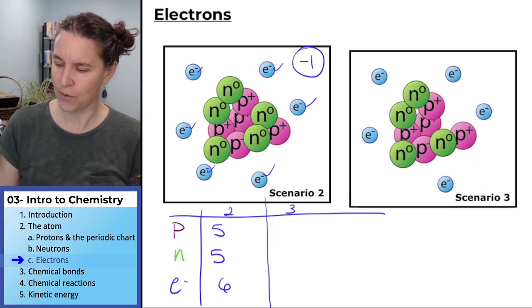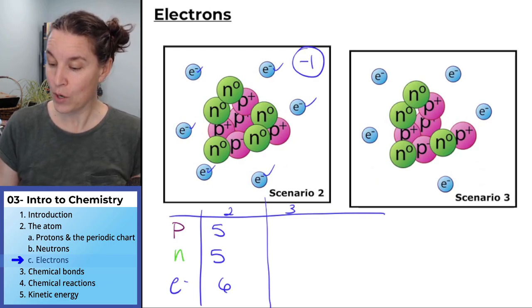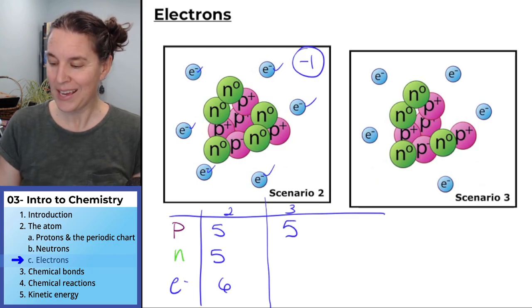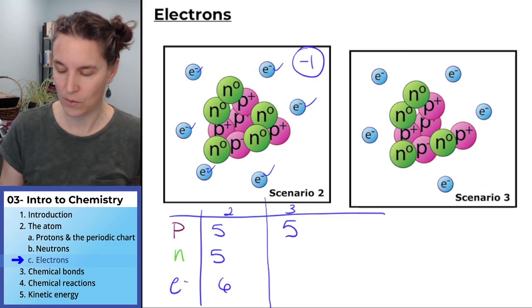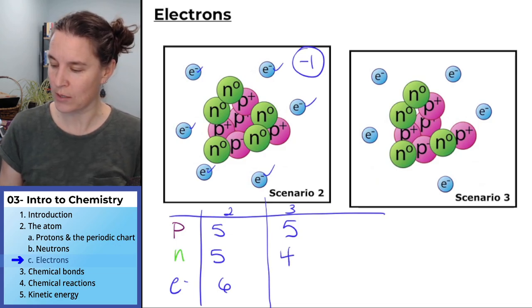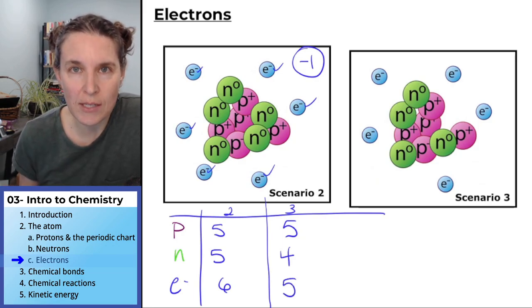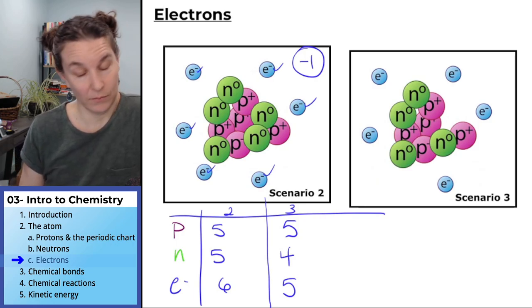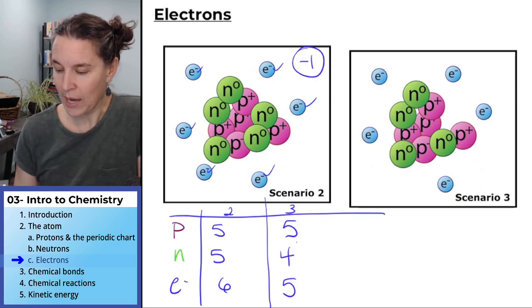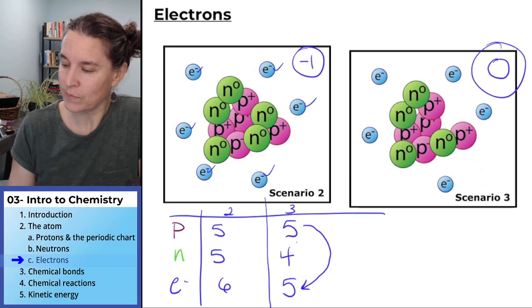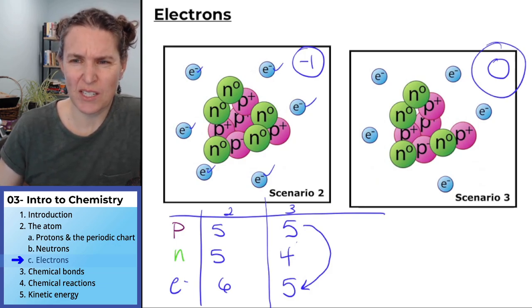Let's try scenario three just for the fun of it. Protons. We still have the same number of protons. So we have five protons. Looks like we lost a neutron. So now we're at four neutrons. And one, two, three, four, five. We kept five electrons. What is the net charge of this? All we look at are protons and electrons and they're equal. So our net charge is zero. That works, doesn't it?